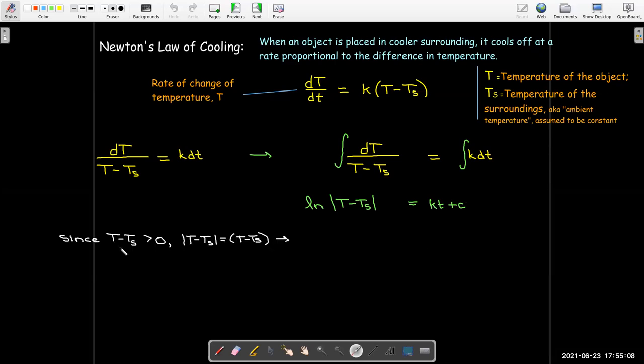Now, the temperature of the object is cooling off. So the assumption is that it's going to be greater than the ambient temperature, the temperature of the surroundings. So T minus T_s is always positive. So we don't need the absolute value signs. The absolute value of the positive number is just the number.